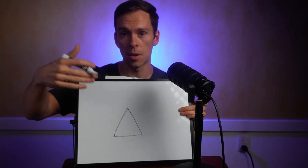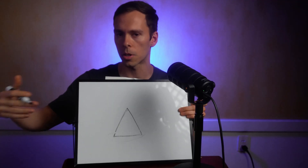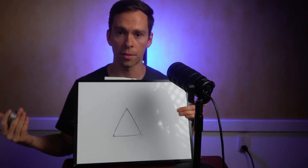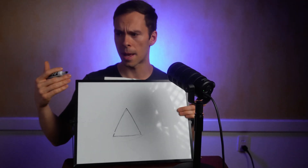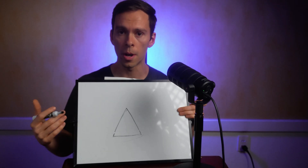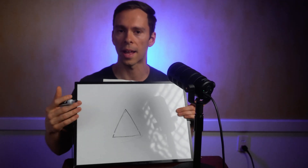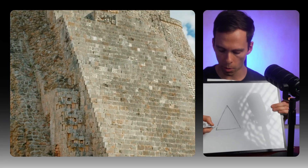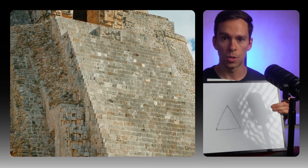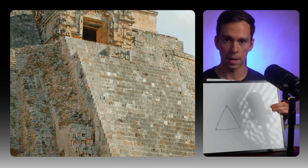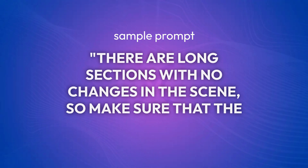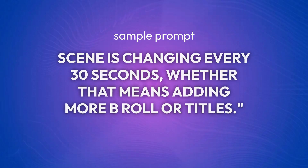That's another tip: give it a desired result in your prompt — how do you want it to look, or what's the desired end state? Depending on the length of the video, it might spend five to fifteen minutes going through and doing a ton of stuff — it'll clean the script, apply studio sound, add text and B-roll, and all sorts of things. Once it's done with that first pass, I'll move up the pyramid to a more specific prompt. My next prompt might be: there are long sections with no changes in the scene, so make sure the scene is changing every thirty seconds, whether that means adding more B-roll or titles.